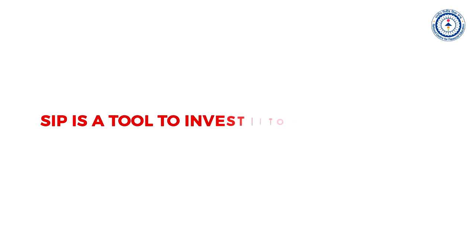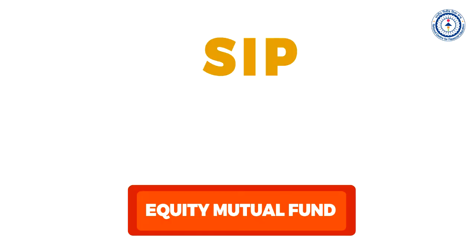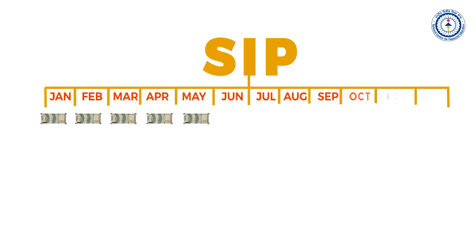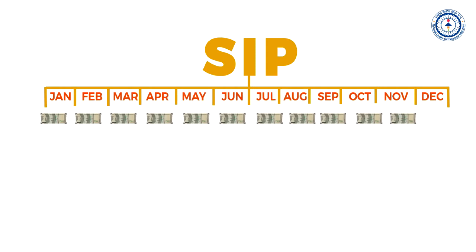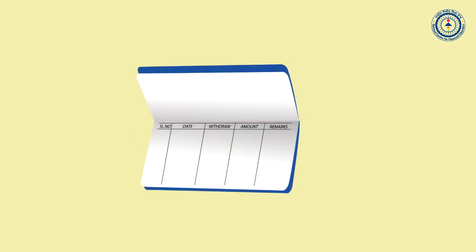The returns are in turn shared between the investors. Systematic Investment Plan or SIP is a tool to invest into mutual funds. In an SIP, you invest on a regular basis in a mutual fund and could start with just 500 rupees every month. The SIP amount will get auto-debited from your account.